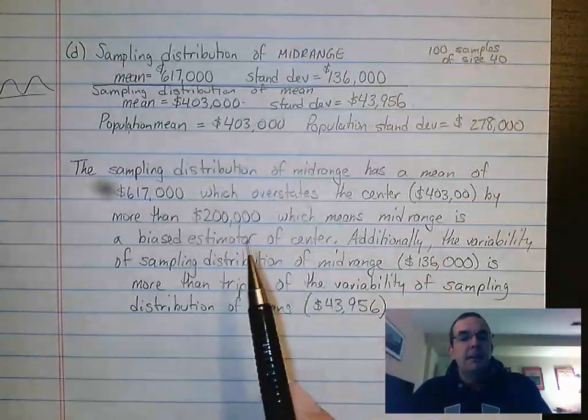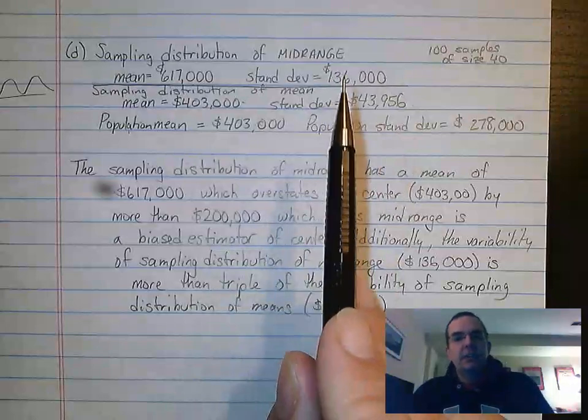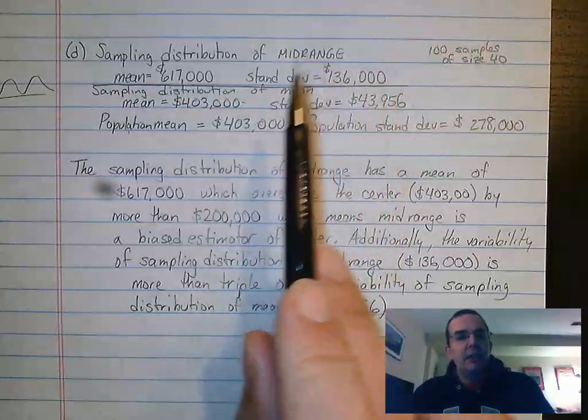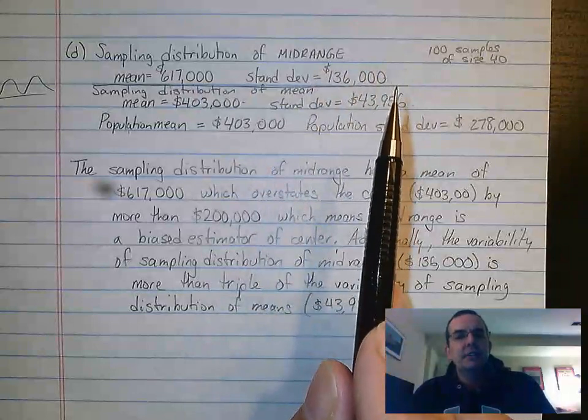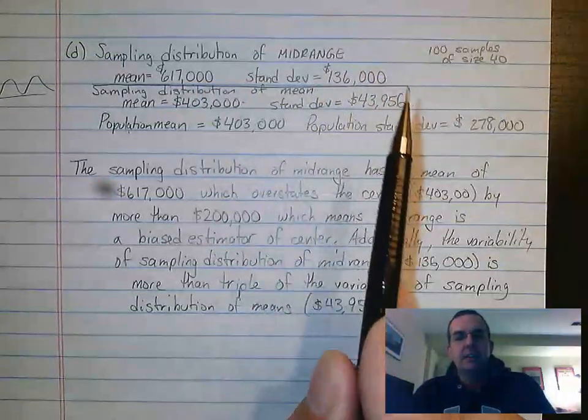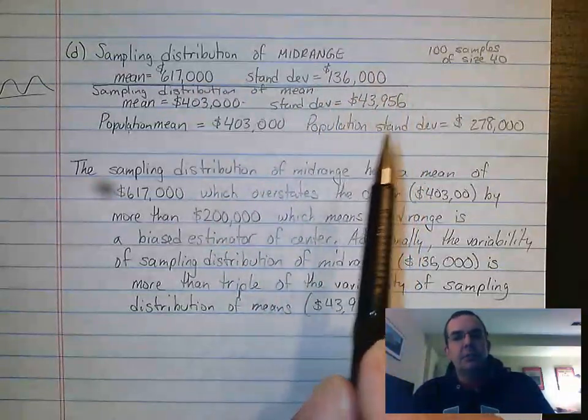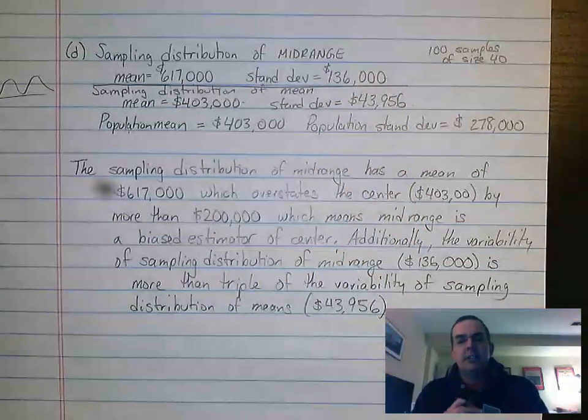The variability also is an issue because if we look at the variability here for the sampling distribution of mid-range, it's $136,000. If we look at the standard deviation of the sampling distribution of means, it's $43,956.